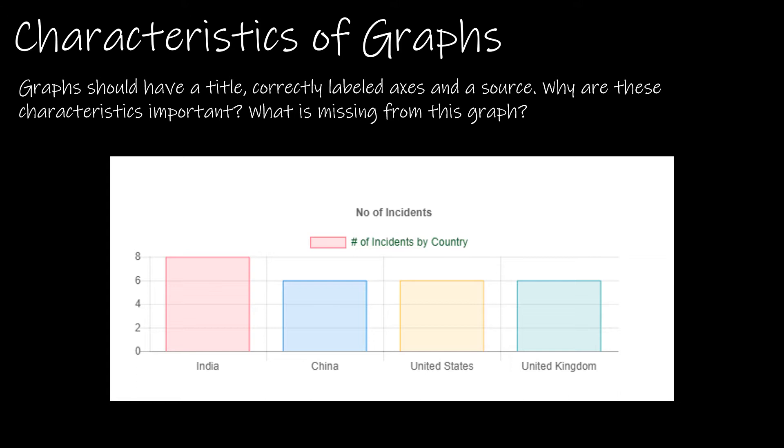So here is a very sparse bar graph. I can tell that this is qualitative data. I'm looking at India, China, the US, and the UK. I have no idea what incidents we're looking at. I don't know where the information came from, so there's no source. We have a title, but the title doesn't necessarily tell me what's going on. Number of incidents. So what kind of incidents are we looking at?